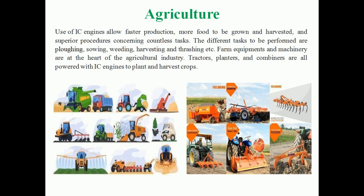The next application is agriculture. In agriculture, in order to achieve faster production and more food production, the use of engines allows faster production and more food to be grown and harvested. The different tasks to be performed are plowing, sowing, weeding, harvesting, threshing, etc.